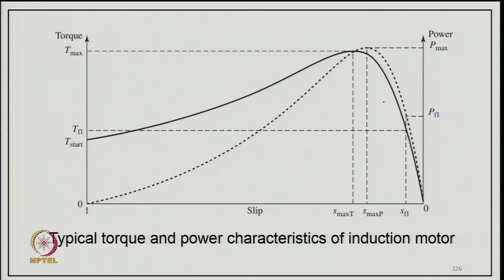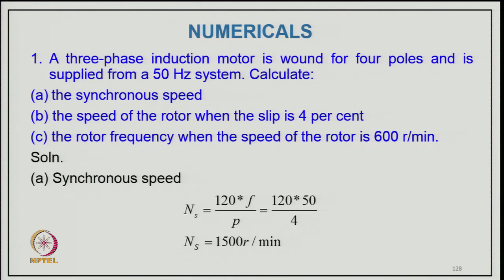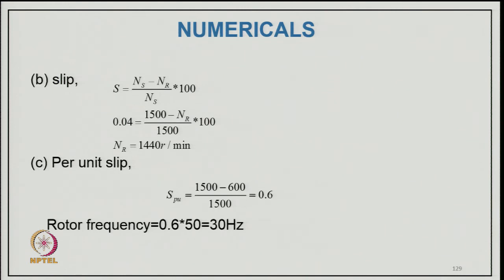Numerical Example 1: A three-phase induction motor wound for 4 poles is supplied from a 50 Hz system. Solution: Synchronous speed Ns = 120f/P = 120×50/4 = 1500 RPM. With 4% slip: Nr = Ns(1 − s) = 1500×0.96 = 1440 RPM. At 600 RPM: per-unit slip = (1500 − 600)/1500 = 0.6; rotor frequency fr = s×f = 0.6×50 = 30 Hz.